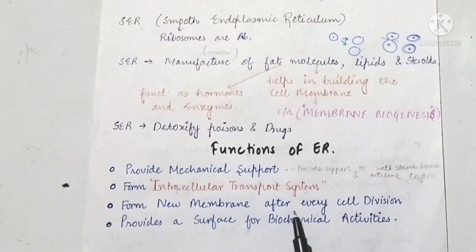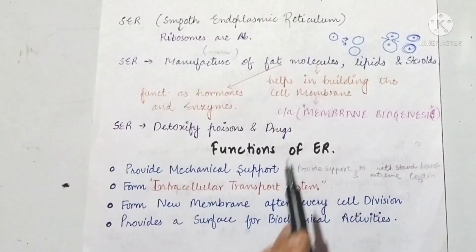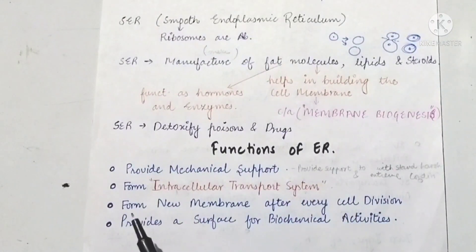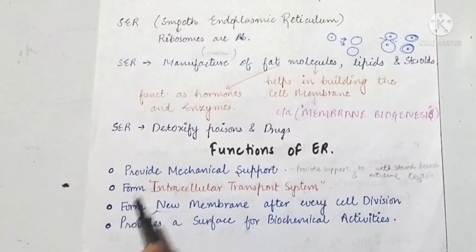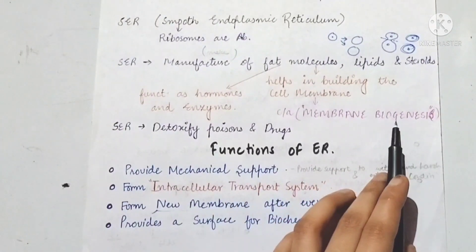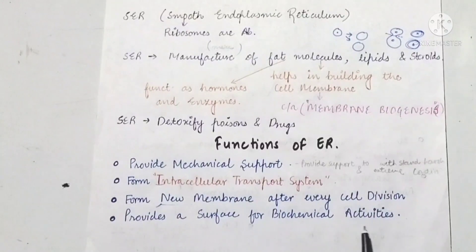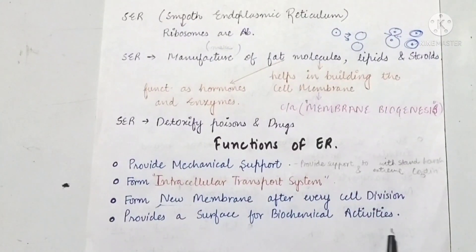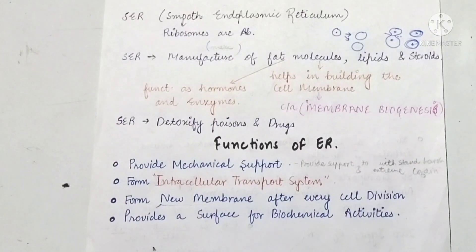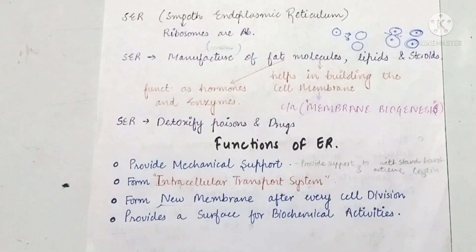Third, endoplasmic reticulum helps to form new membranes after every cell division. Fourth, smooth endoplasmic reticulum provides a surface for biochemical activities, meaning that important chemical reactions in the cell are associated with the endoplasmic reticulum.